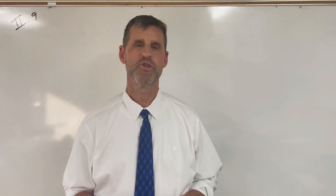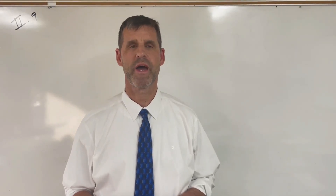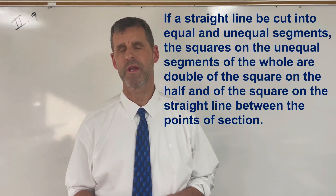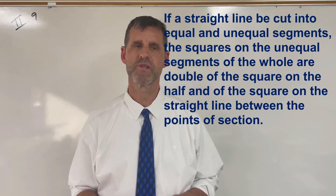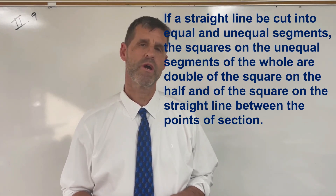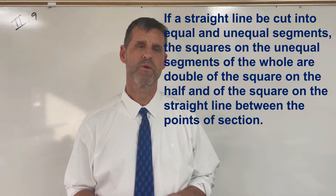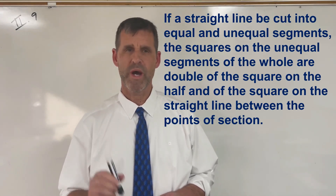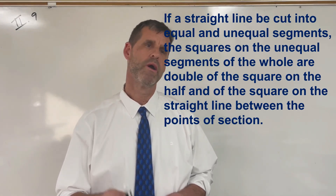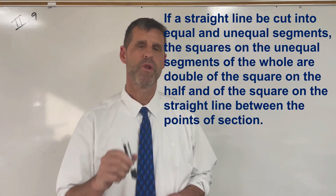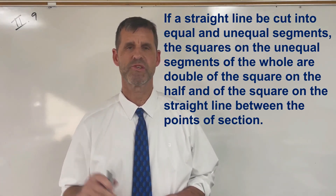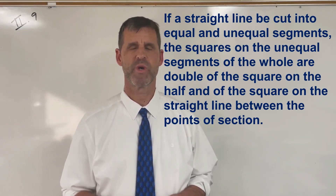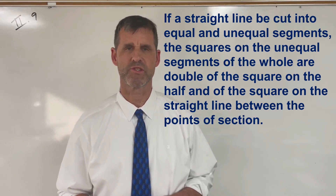Euclid's Elements, Book 2, Proposition 9. If a straight line be cut into equal and unequal segments, the squares on each of the unequal segments will be equal to twice the square on the half plus twice the square on the straight line between the points of section.